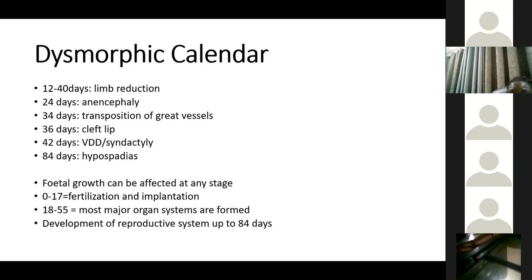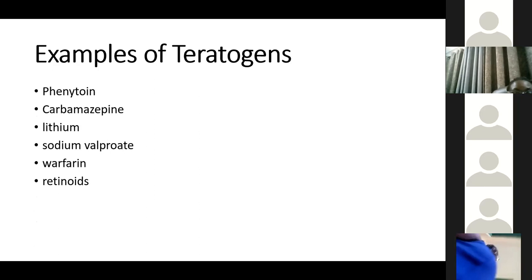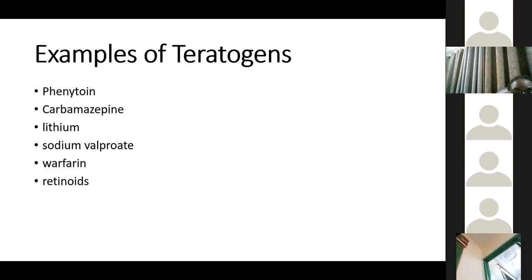If you cannot avoid giving medication during the first trimester, there are medications known to be safe in pregnancy. Examples of teratogens to avoid include phenytoin, carbamazepine, lithium, sodium valproate, warfarin, and retinoids. If a patient is already on phenytoin or carbamazepine before becoming pregnant, you must change to something else.